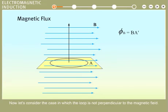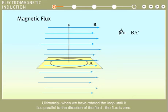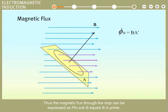Now let's consider the case in which the loop is not perpendicular to the magnetic field. It is obvious that fewer field lines are threading the loop than in the previous case. The magnetic flux through the loop decreases as we rotate the loop. Ultimately, when we have rotated the loop until it lies parallel to the direction of the field, the flux is zero. Notice that the number of field lines threading the loop is equal to the number of field lines that go through the shaded area A prime, which is perpendicular to B. Thus, the magnetic flux through the loop can be expressed as phi sub B equals BA prime.